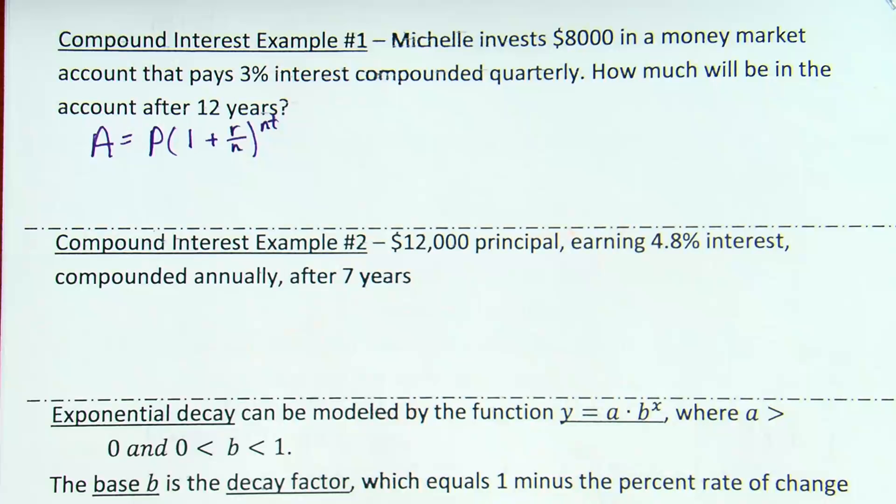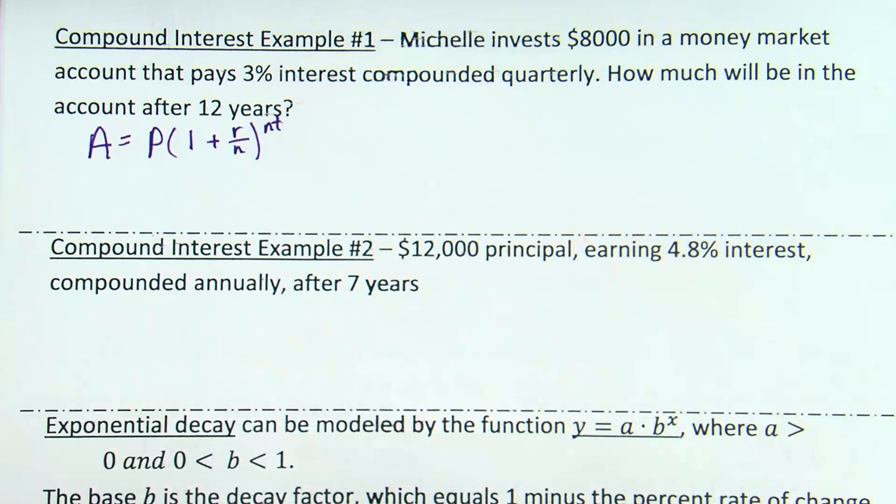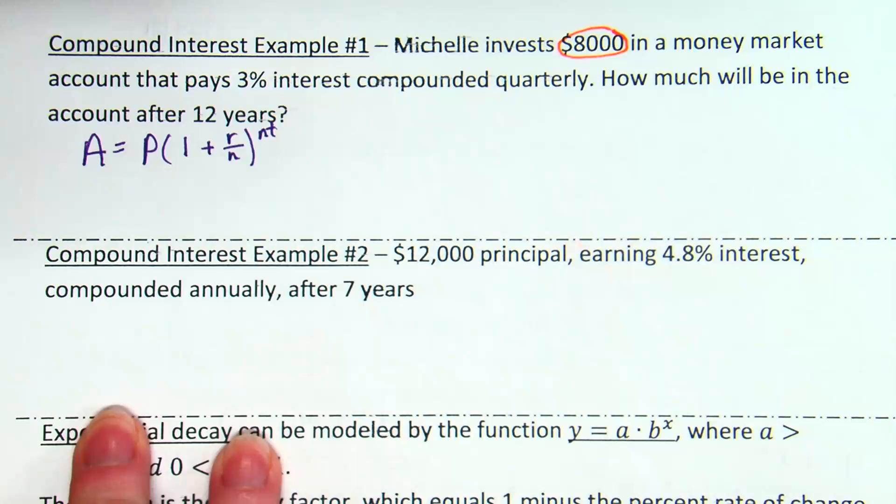So, Michelle invests $8,000 in a money market account that pays 3% interest, compounded quarterly. How much will be in the account after 12 years? Okay. Got any information that's going to tell us anything? Okay. Okay. So, what's that $8,000 going in for? Right. But that's your initial amount. So, that's what we're going to call our principal. It's what you start with. So, it's the amount you initially invest.